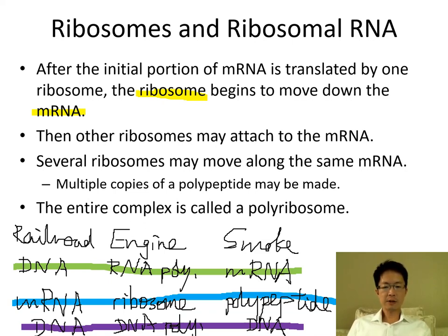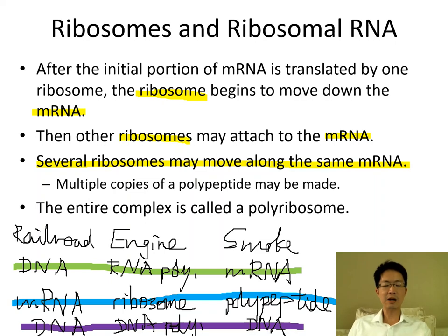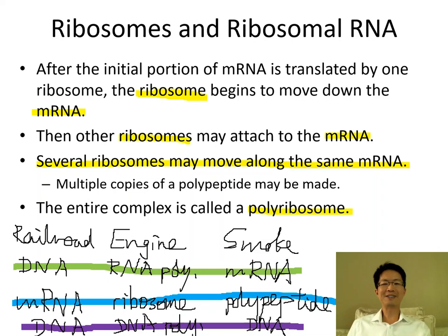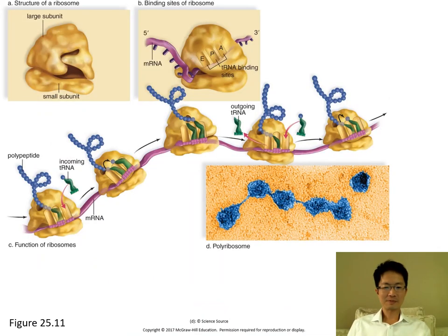Other ribosomes can attach to the same messenger RNA. One messenger RNA can have multiple ribosomes translating at the same time. Several ribosomes can move along the same messenger RNA simultaneously, producing multiple copies of the same amino acid sequence at the same time. We call this a polyribosome — not a factory, but a polyribosome.